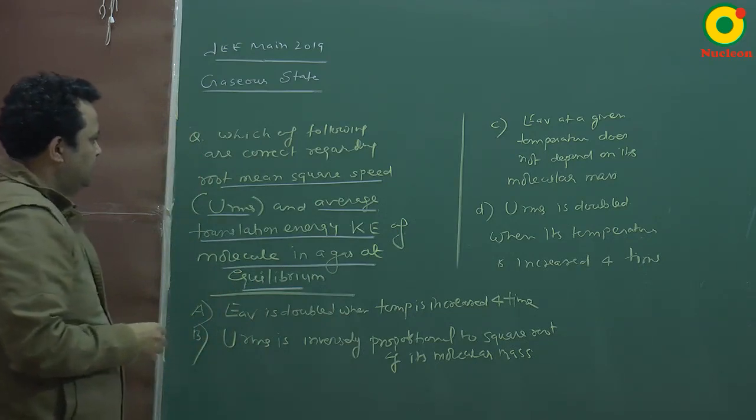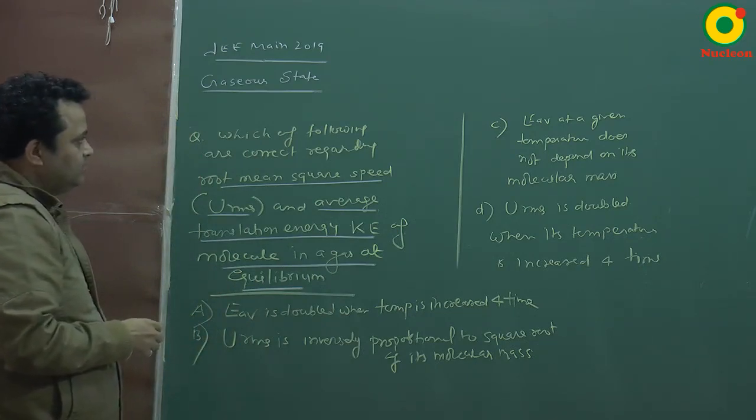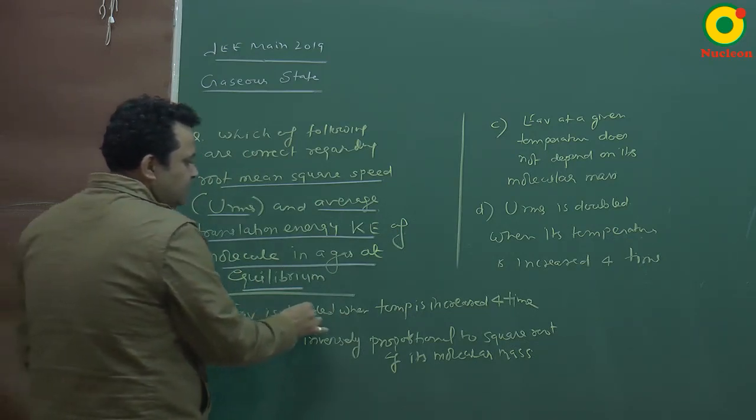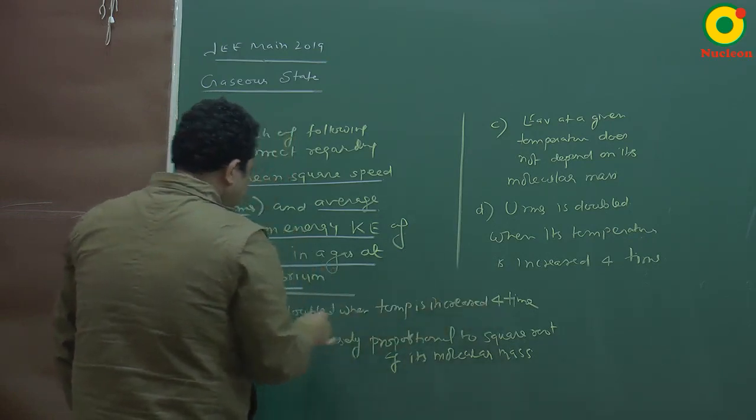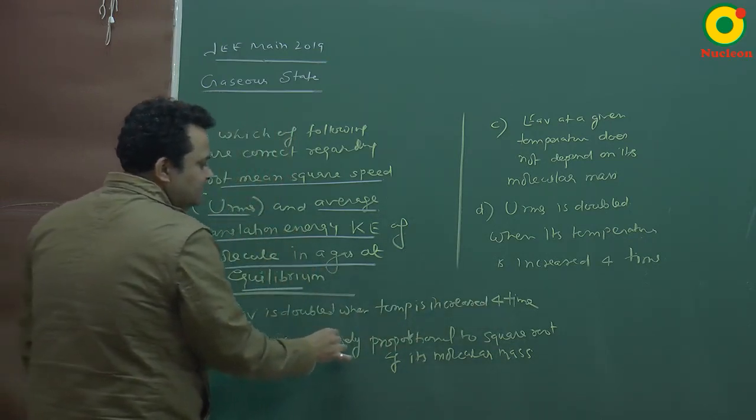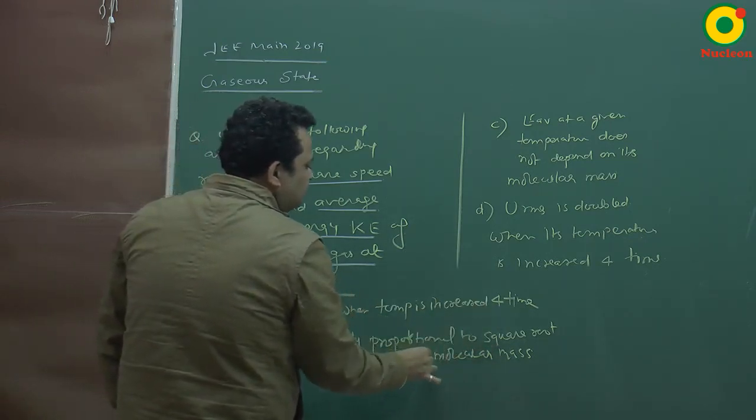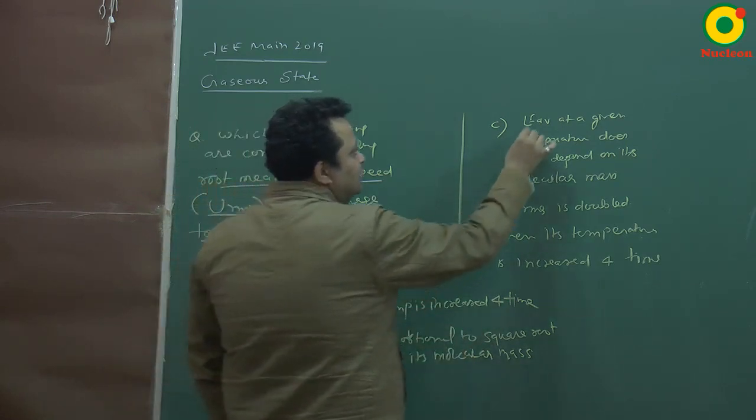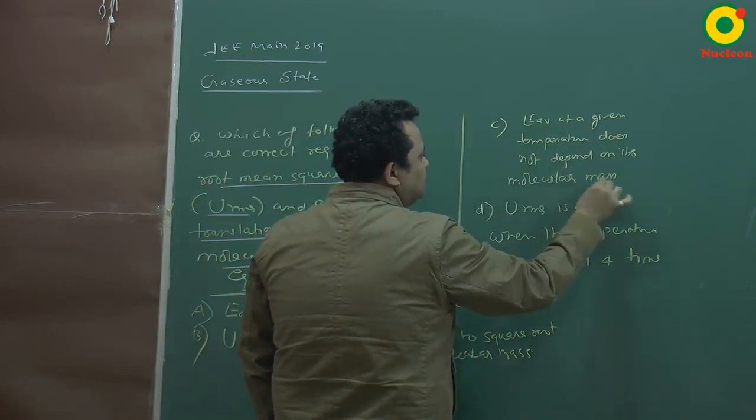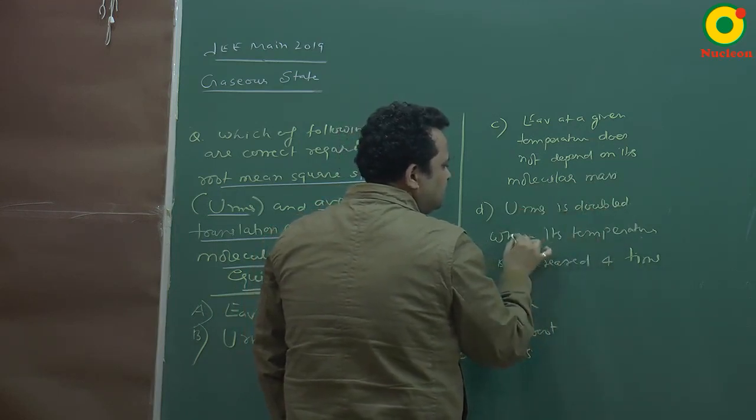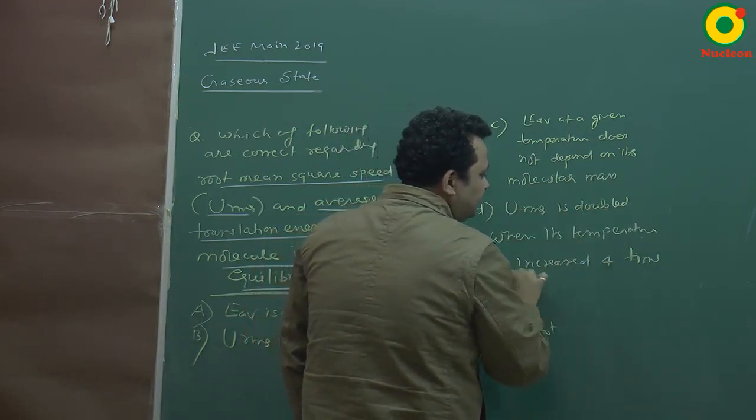Let's see, there are four options. E average is doubled when temperature is increased four times. URMS is inversely proportional to square root of its molecular mass. E average at a given temperature does not depend on its molecular mass. URMS is doubled when its temperature is increased by four times.